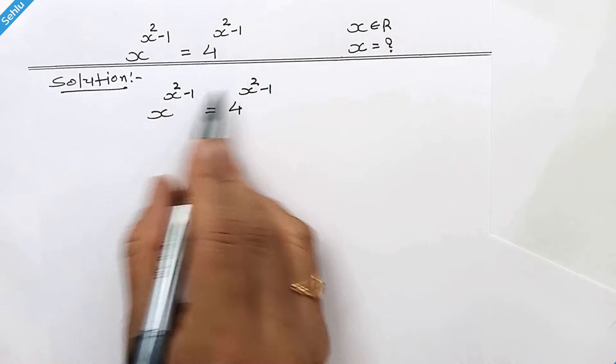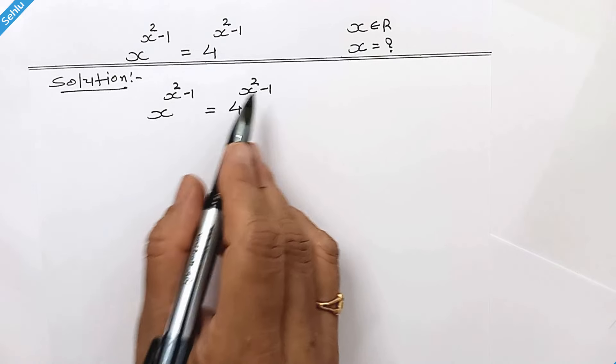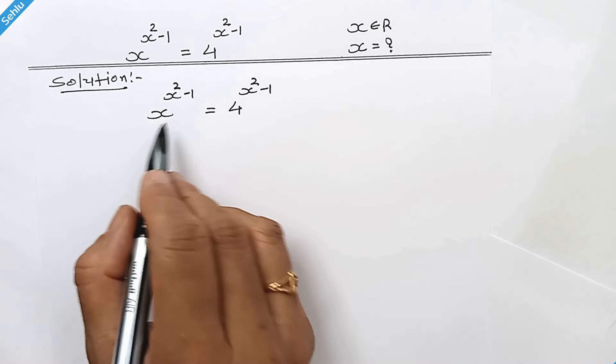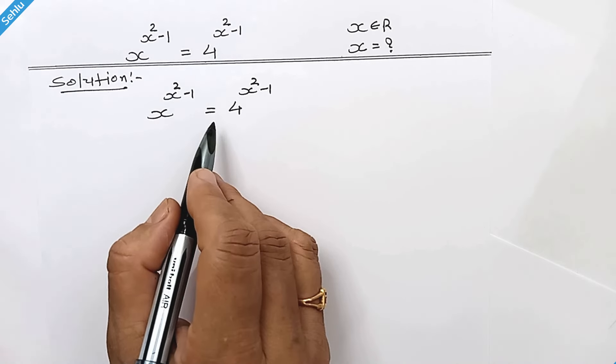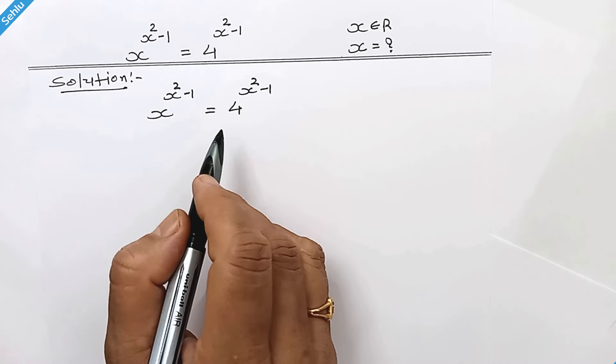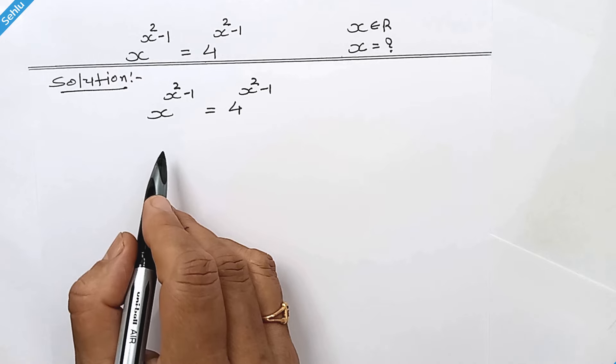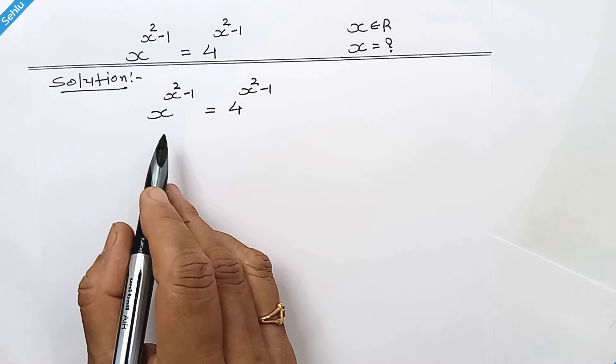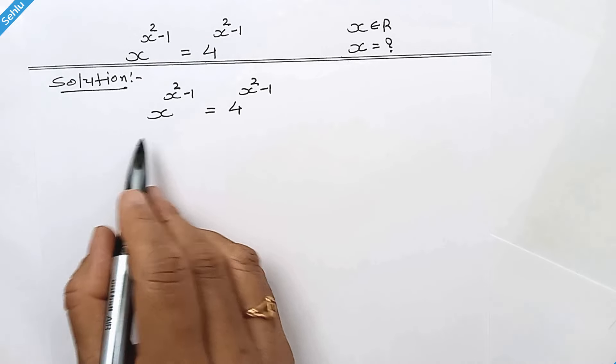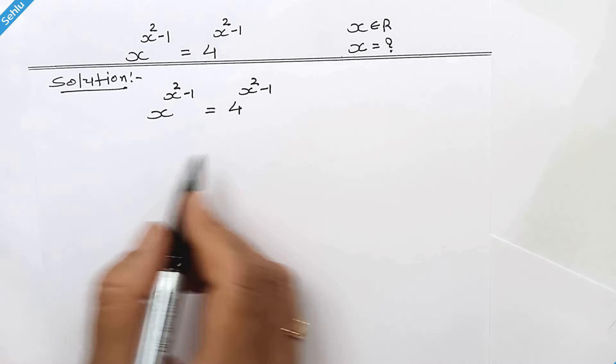It's the same exponent on both sides, so x and 4 can be equated. But that's not the only answer, and we need to take log to find them all.